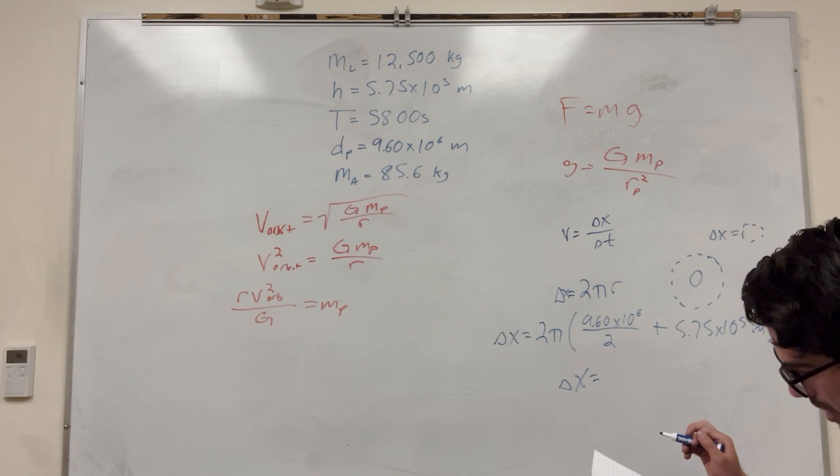So our radius is not just the radius of the planet. It's gonna be the radius of the planet plus the height above the planet that we are. So our height above the planet is this number and our diameter is this number. So we're going to take the diameter divided by two to find the radius of the planet and then add it to our height. So Delta X is equal to two pi and then our radius. So diameter 9.60 times 10 to the 6, divide that by 2 to get the radius and then add it to our height 5.75 times 10 to the 5 meters. And you solve this, and you get delta X. It is equal to 3.37 times 10 to the 6 meters. You go a lot of distance basically.